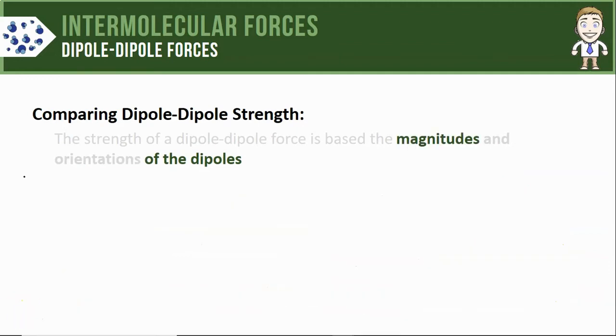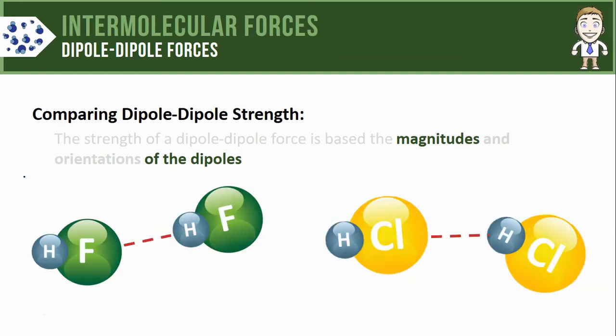Now let's take a look at what we mean by the magnitudes of the dipoles and we'll do that by comparing the dipole-dipole force that would form between hydrogen fluoride molecules and hydrogen chloride molecules. To do this we have to start by comparing the electronegativities of the atoms to see just how polar these molecules are.